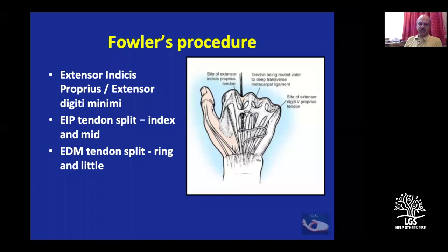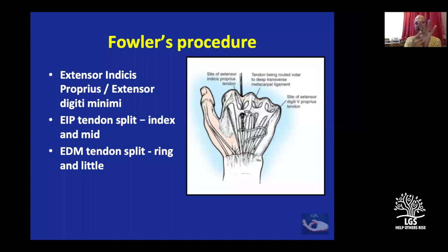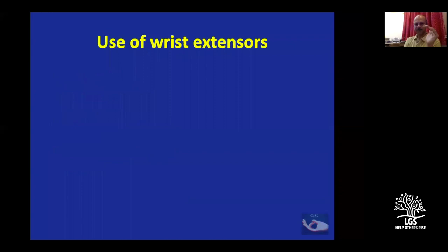Fowler's procedure uses the finger extensors: the extensor indicis proprius is split, harvested, brought to the volar side, and sutured to the lateral bands for the index and middle fingers. Similarly, the ulnar slip of the extensor digiti minimi is split and used for flexion of the MCP joint of the ring and little fingers.